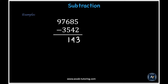In the thousands place, we have 7 minus 3, which is equal to 4. And then in the ten-thousands place, we have 9, which is equal to 9. And so our final answer turns out to be 94,143 for this example.